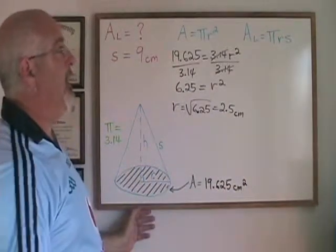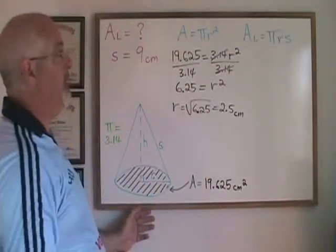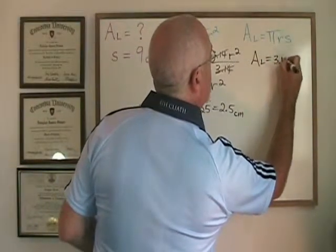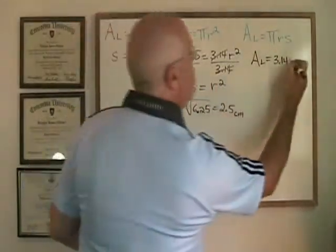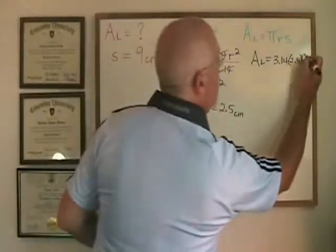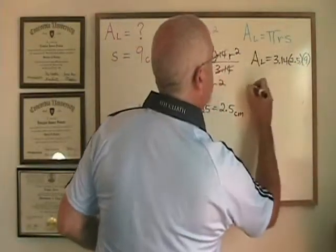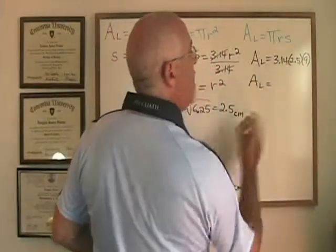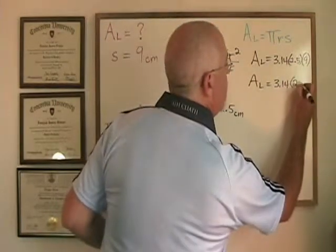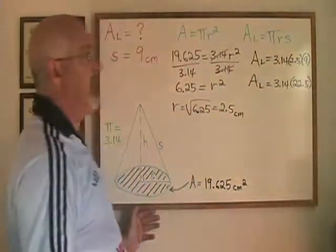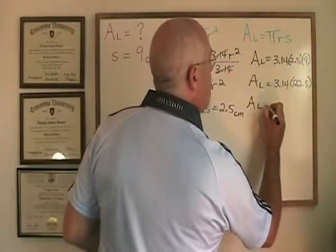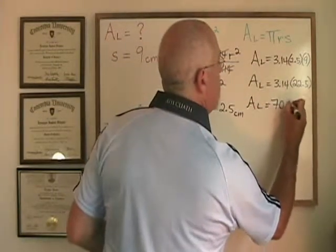Now we can plug it into the lateral area of a cone formula and answer the question. Lateral area is equal to pi times radius 2.5 times slant height 9, which is equal to pi times 22.5, the result when you multiply 2.5 by 9.